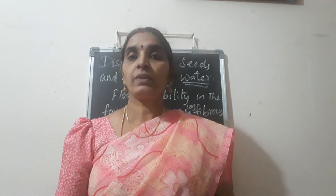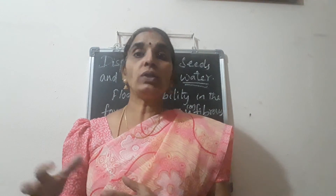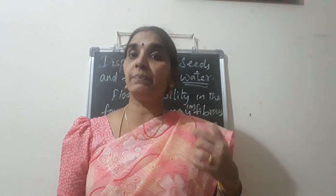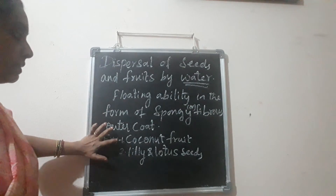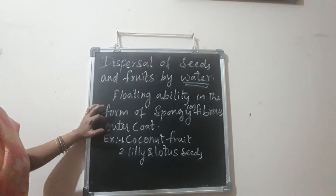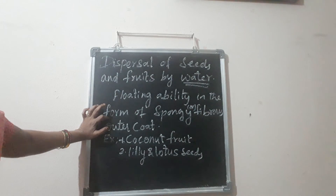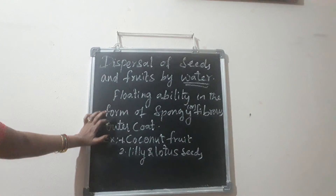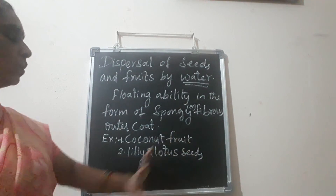The dispersal of seeds and fruits through water: certain seeds have the ability to float in water because they develop floating capacity through a fibrous coat or spongy tissue around them. Examples of seeds dispersed through water are coconut fruits and lily and lotus seeds. The coconut fruit has a thick fibrous outer coat which enables it to float in water and be carried away to far-off places.